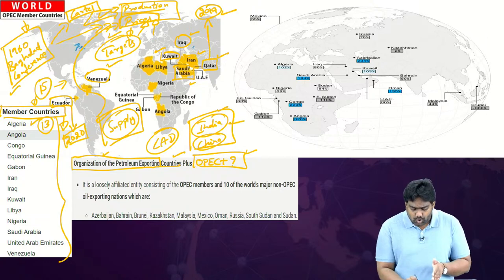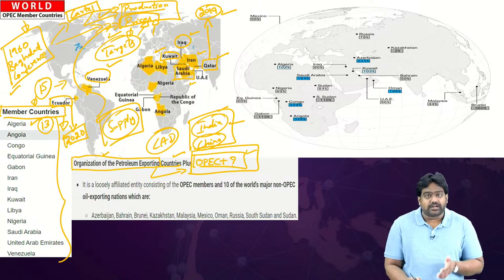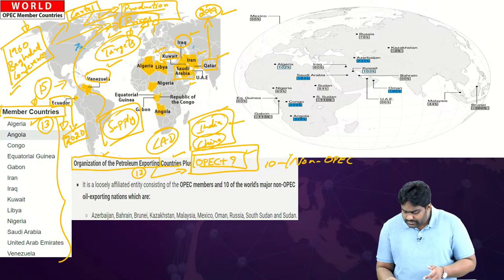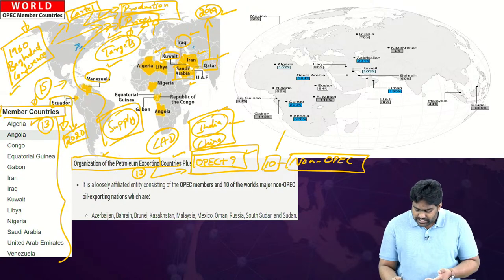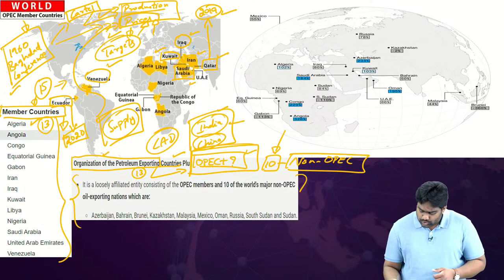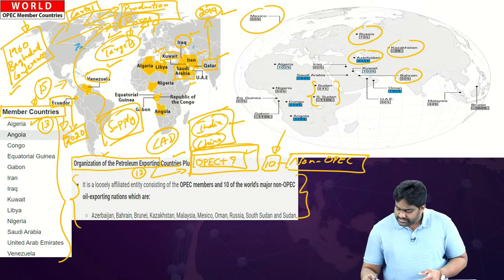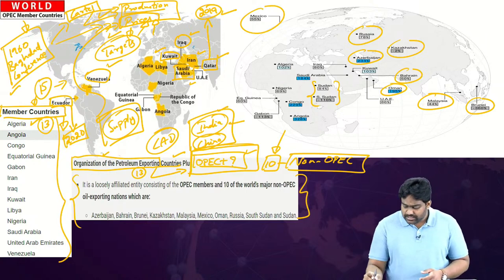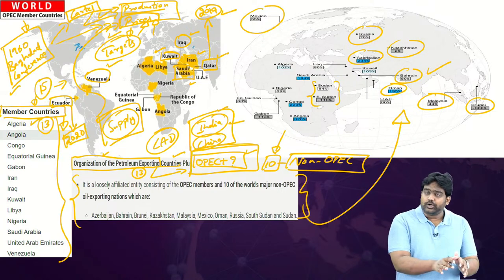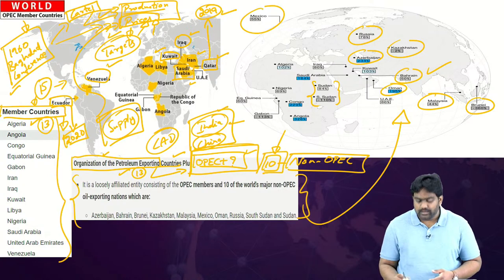OPEC-plus is an informal setup which includes the 13 OPEC countries plus 10 non-OPEC oil-producing and exporting nations. These 10 countries include Mexico, Russia, Sudan, South Sudan, Kazakhstan, Azerbaijan, Bahrain, Oman, Malaysia, and Brunei. They are part of this expanded grouping known as OPEC-plus, which collectively represents the major oil producers of the world.